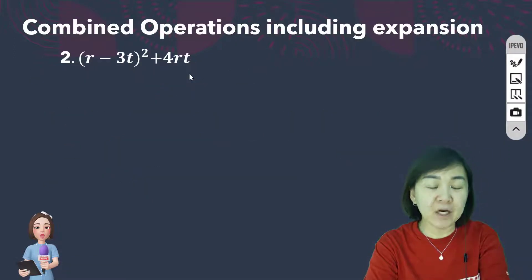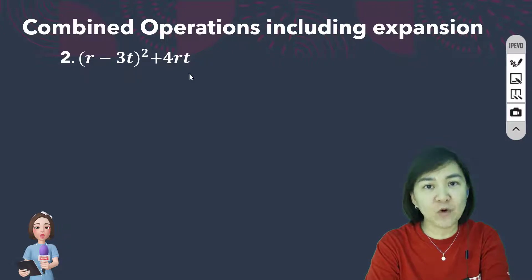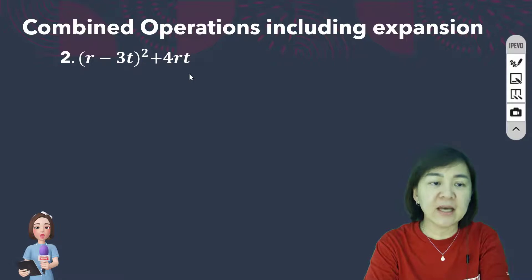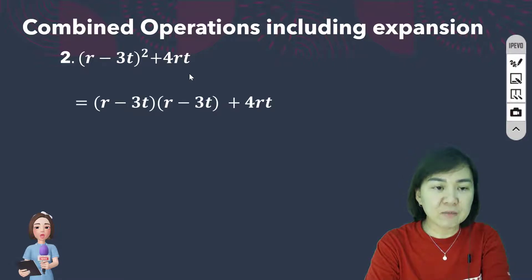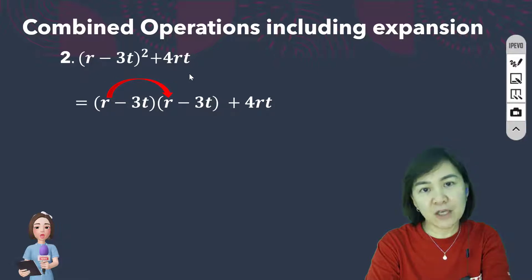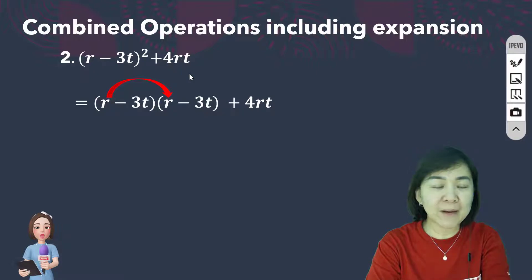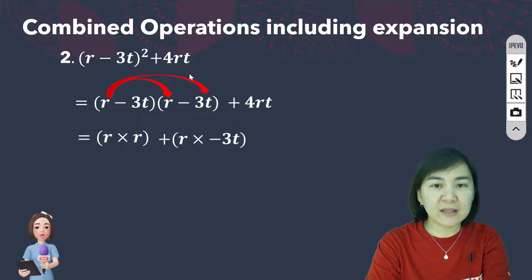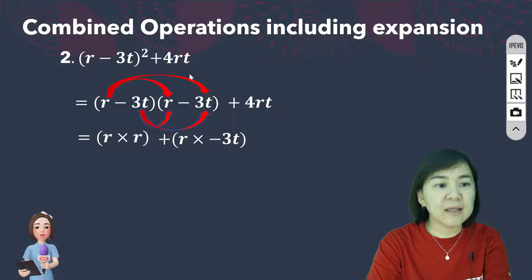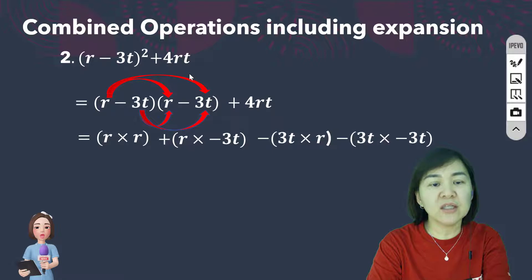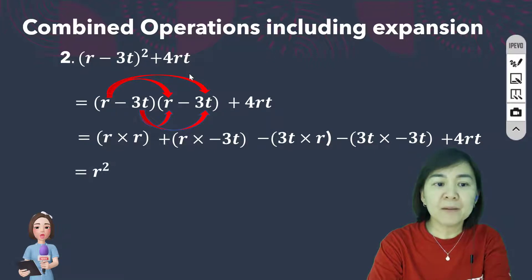Let's look at another example: bracket R minus 3T squared plus 4RT. To solve this, we have to expand bracket R minus 3T squared first, then add 4RT, following the BOMAS rule. We expand using the arrow method. R times R gives R squared, R times negative 3T gives negative 3RT, then negative 3T times R gives negative 3RT.